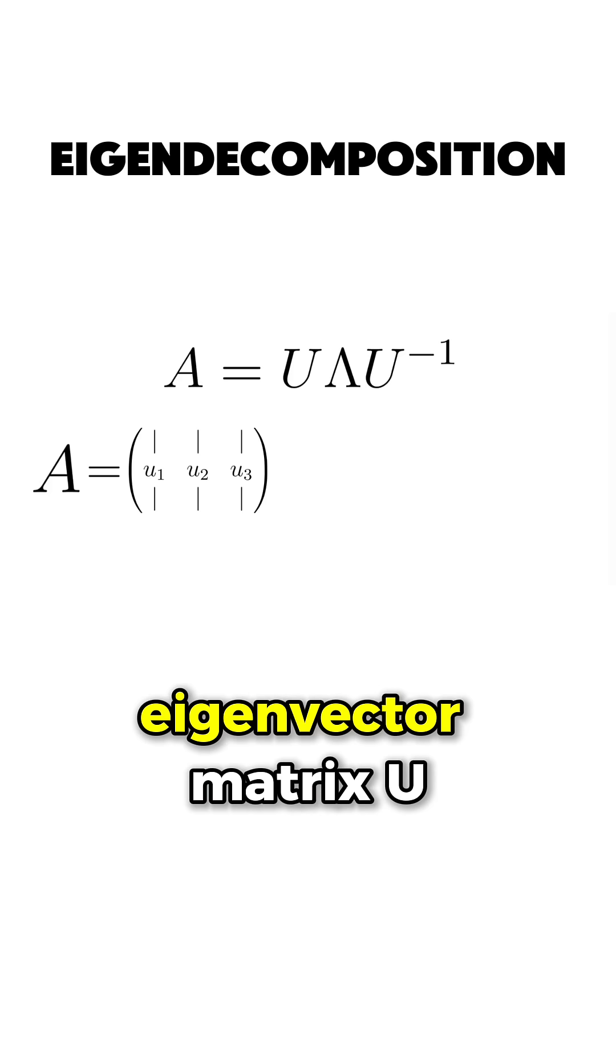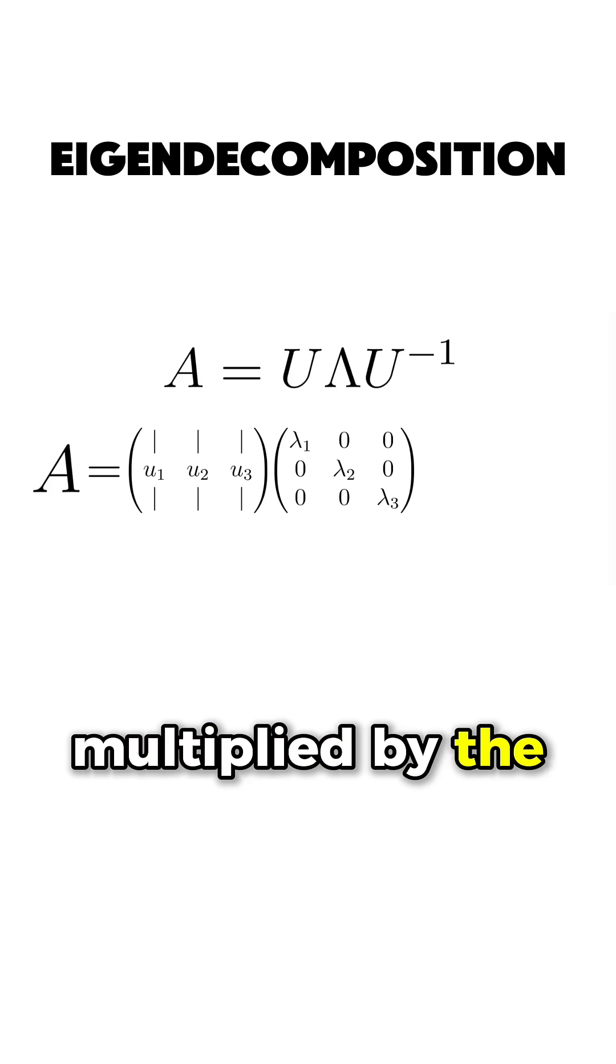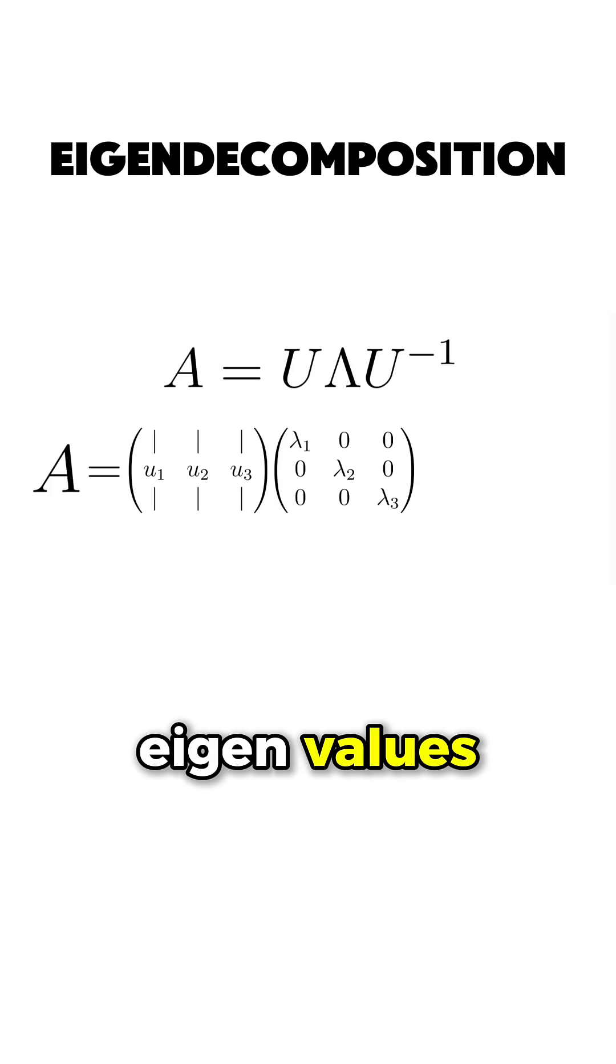We have the eigenvector matrix U, multiplied by the diagonal matrix that contains the eigenvalues, multiplied by the inverse of U.